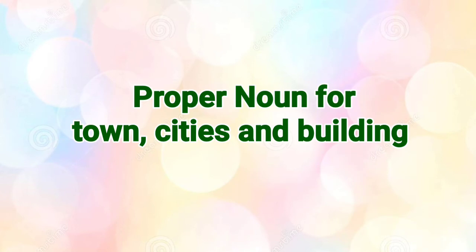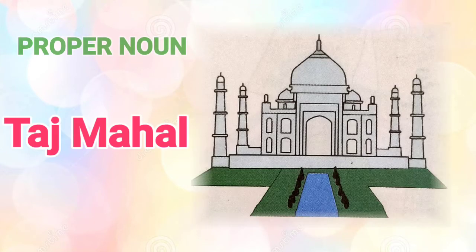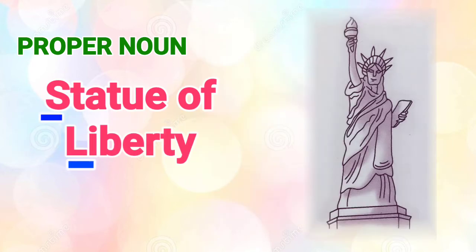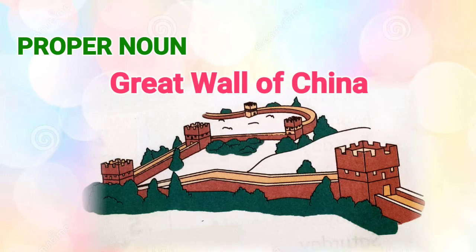The names of towns, cities, buildings, and landmarks are also proper nouns. For example, Taj Mahal is a beautiful monument, so it is a proper noun because it has a specific name. It starts with capital T and capital M. Similarly, the Statue of Liberty is also one of the most famous statues and stands with a capital letter. The Great Wall of China is also a proper noun because it signifies the importance of China, and it is written in capital letters.